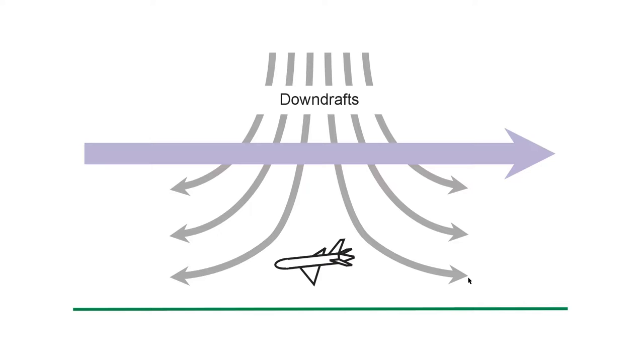Then it reaches the center of the downdraft where the air pushes straight down on it, bringing it closer to the surface. And finally, it reaches this part of the microburst where the airspeed of the craft is greatly reduced. And that's when it suddenly loses altitude and crashes—well, sometimes crashes—either that or produces great difficulty for the pilot.